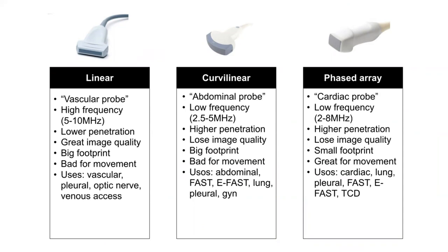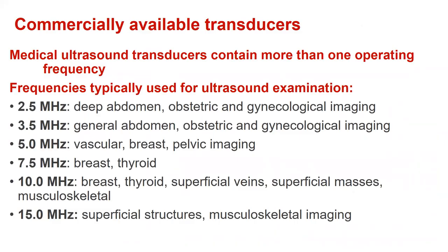The phased array, or so-called cardiac probe, uses low frequencies, has higher penetration, and a small footprint. In thyroid ultrasound imaging, we mainly use 7.5 to 10 MHz probes.